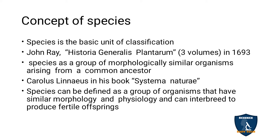Carolus Linnaeus, the father of taxonomy, in his book Systema Naturae defined species as a group of organisms that have similar morphology and physiology and can interbreed to produce fertile offspring. Morphology means physically or externally similar; physiology means functional similarities like digestion, circulation, nervous system. Together with reproduction of fertile young ones, that defines a species.